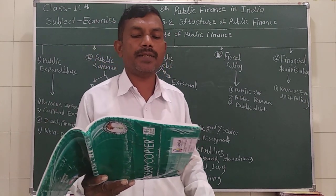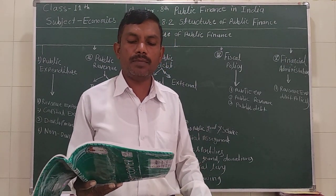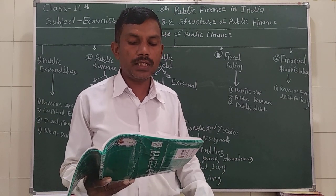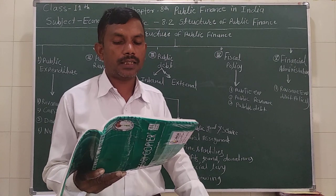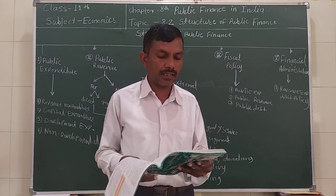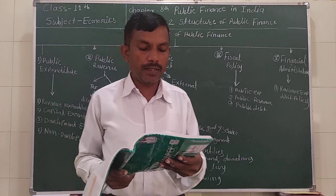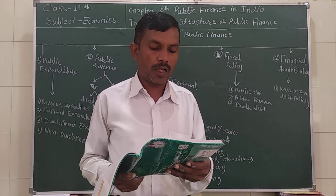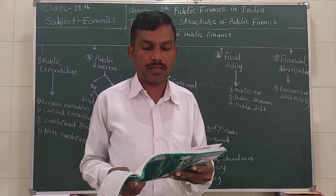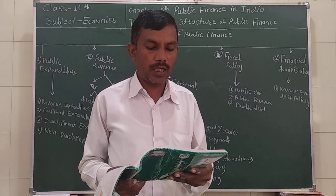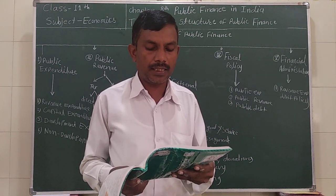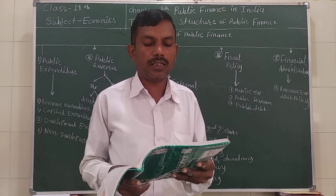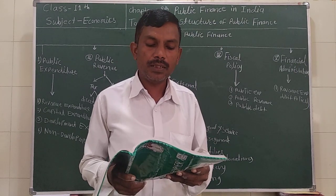Today we will see the classification of public expenditure. Different economists have classified public expenditure on different bases. We shall now study some important classifications. Number 1: Revenue expenditure. Revenue expenditure is the expenditure a government incurs for the day-to-day functioning of government departments and various services. It is incurred regularly. For example: administration costs, government salaries, allowances and pensions of government employees, medical and public health services, and other such items.